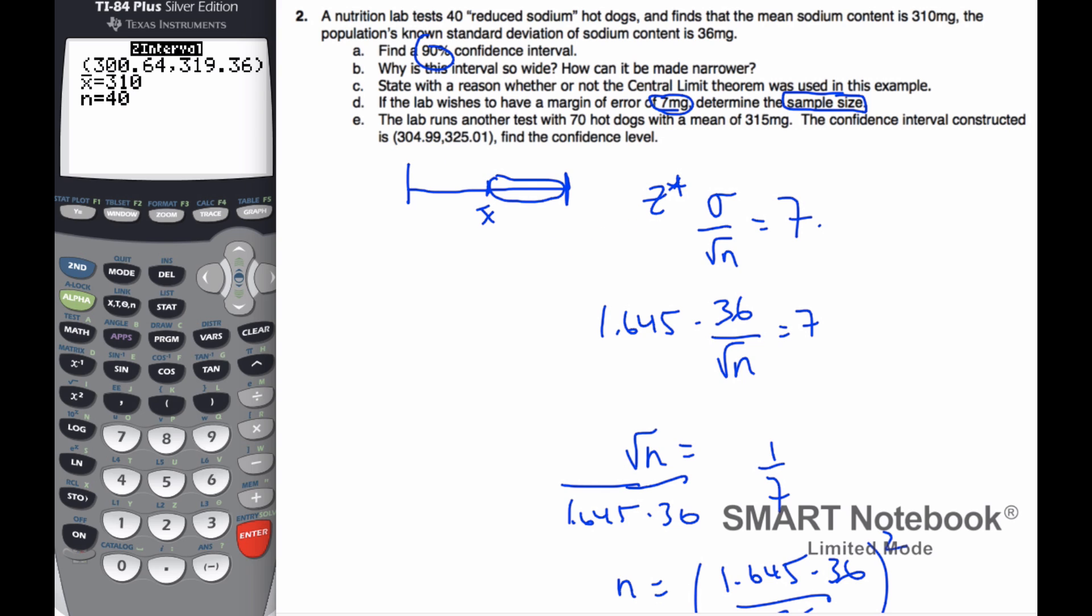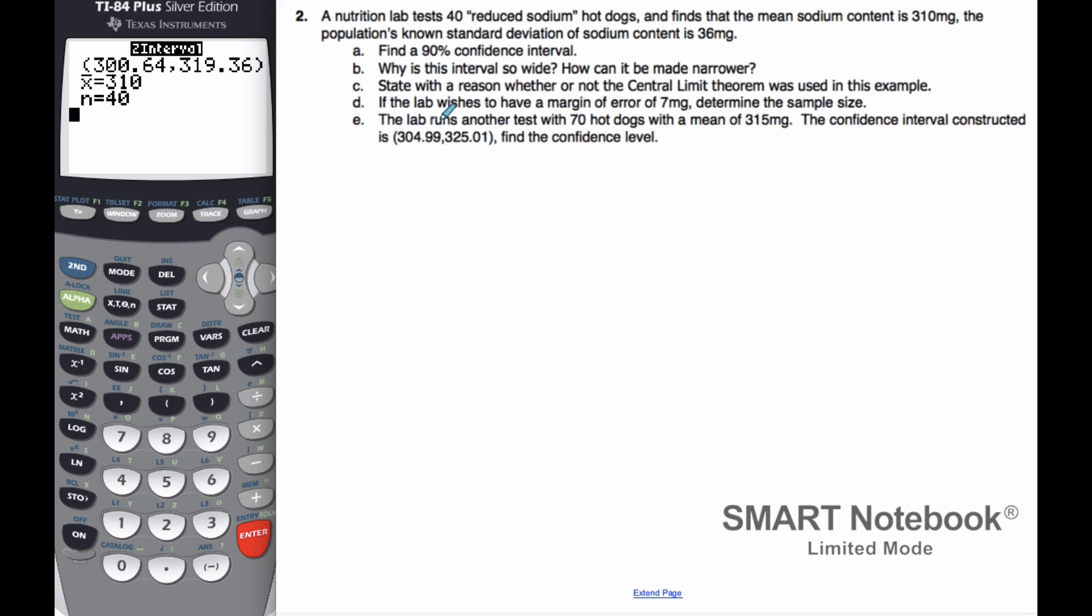And then finally, part E. The lab runs another test with 70 hot dogs, so n is now 70. The mean x̄ is 315. The confidence interval constructed was this. So here's 304.99, here's 315, and here is 325.01. So I want to find the confidence level.